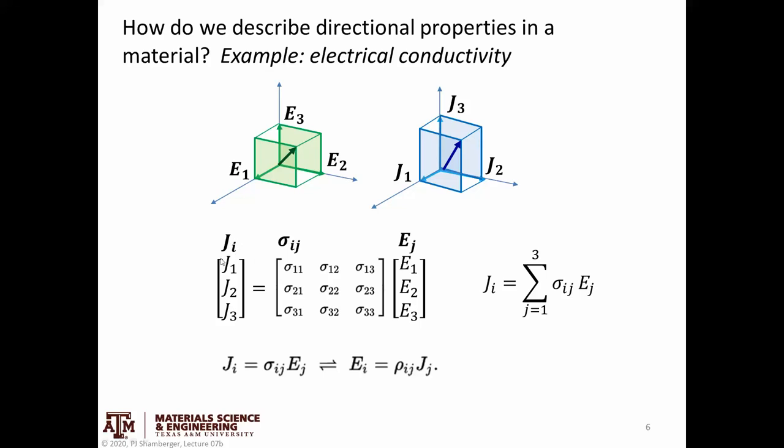And similarly, current density could be described as a vector. So I could break it down into current density along three principal component directions. So if this is the case, if I want to relate a column vector with three elements to a column vector with three elements, I know that I need a 3x3 matrix to relate these two things.